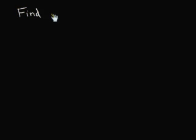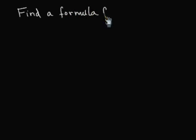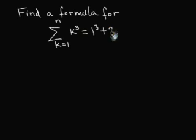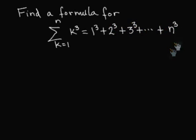In the last lecture, we found a formula for the summation from k equal 1 to n of k squared. In this lecture, we propose to find the summation from k equal 1 to n of k to the cube, which is equal to 1 to the cube plus 2 to the cube plus up to n to the cube.